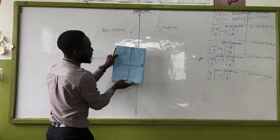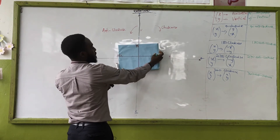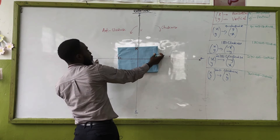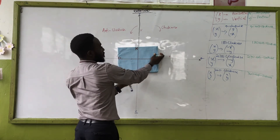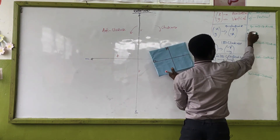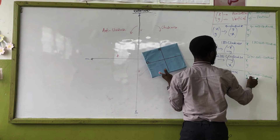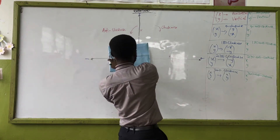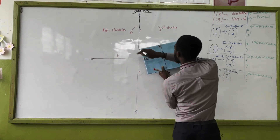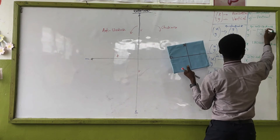For 90° anti-clockwise, we move one time. The horizontal maps to negative y and the vertical maps to positive x. So for 90° anti-clockwise: (x, y) → (-y, x).